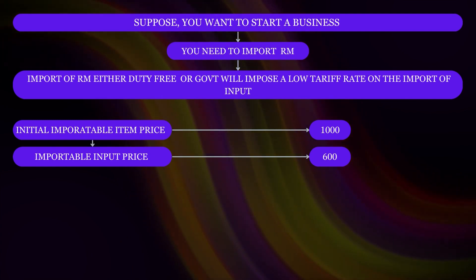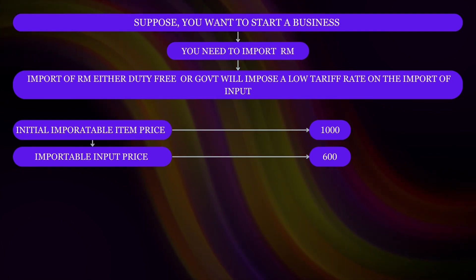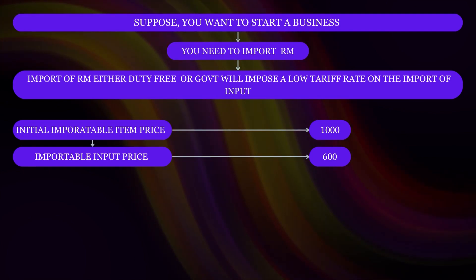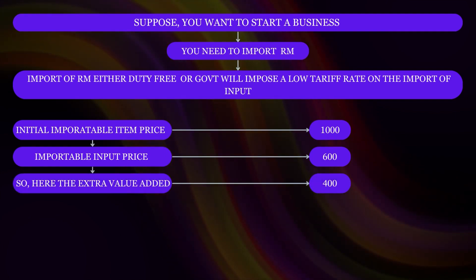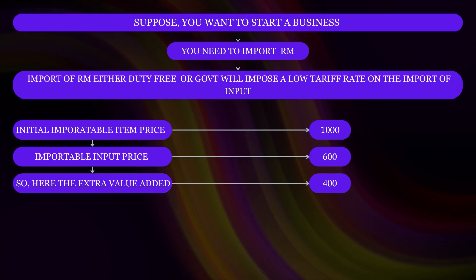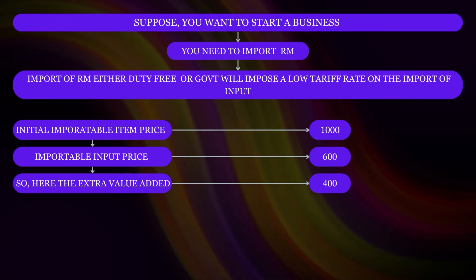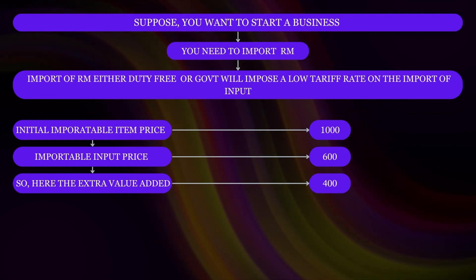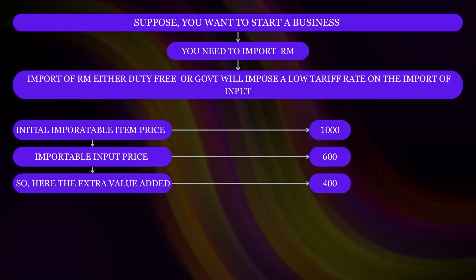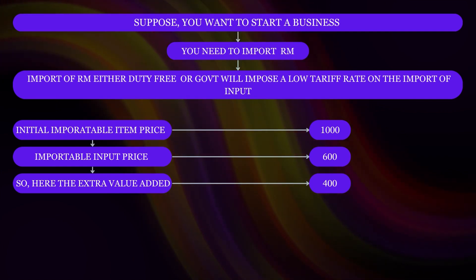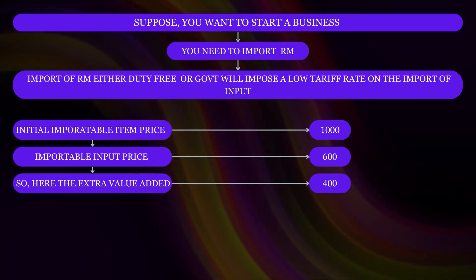You have to assemble the product, display it in your showroom, take effort to resell, and convince the customers — all these things are needed. So the extra value added here is 1000 minus 600, that is 400. The value added is the difference between the selling price and the cost of its material inputs. Here the selling price is 1000 and the cost of material input is 600, so the value added is 400.